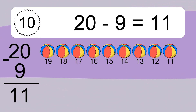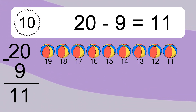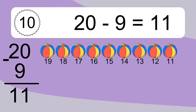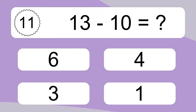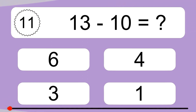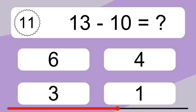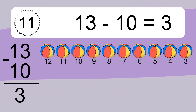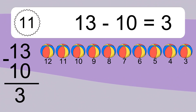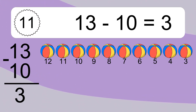Thirteen minus ten equals three. Let's count it: twelve, eleven, ten, nine, eight, seven, six, five, four, three.